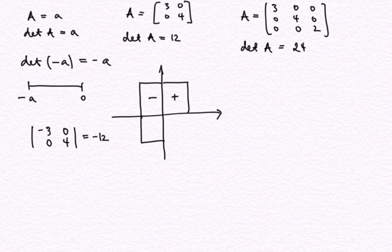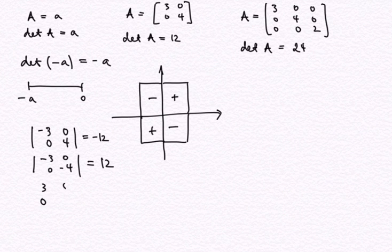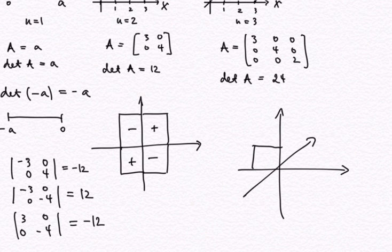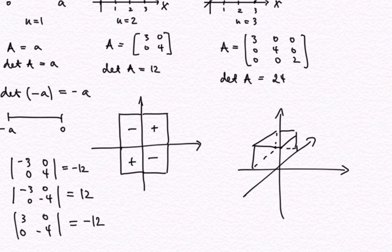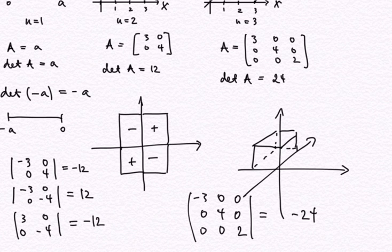If both x and y point in the negative direction — vectors (−3, 0) and (0, −4) — the product of the diagonal elements gives a positive result again. If only one direction is negative, such as columns (3, 0) and (0, −4), we get a determinant of −12. The same sign convention carries through to the three-dimensional situation: if the x-side points in the negative direction, the corresponding matrix has columns (−3, 0, 0), (0, 4, 0), (0, 0, 2), giving a determinant of −24.